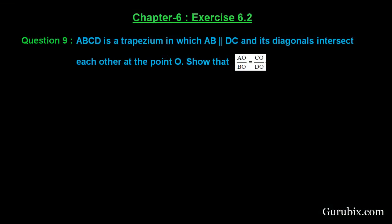Welcome friends, let us solve question number 9 of exercise 6.2 of chapter 6. The question says ABCD is a trapezium in which AB is parallel to DC and its diagonals intersect at point O. Show that AO over BO equals CO over DO. This is a very important question.